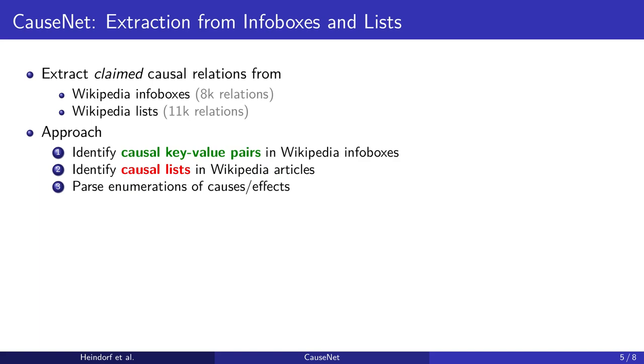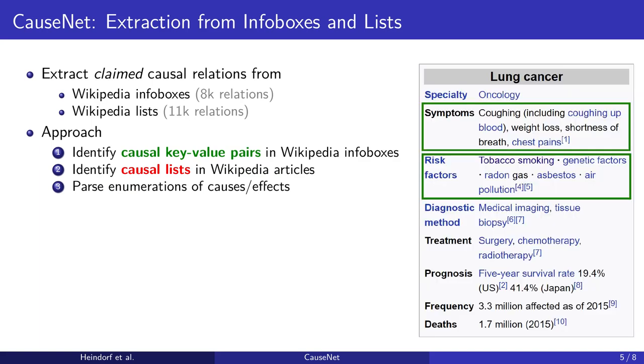Besides extracting causal relations from texts, we also extract causal relations from Wikipedia infoboxes and lists. For example, certain keys in Wikipedia infoboxes such as symptoms and risk factors signal causality.